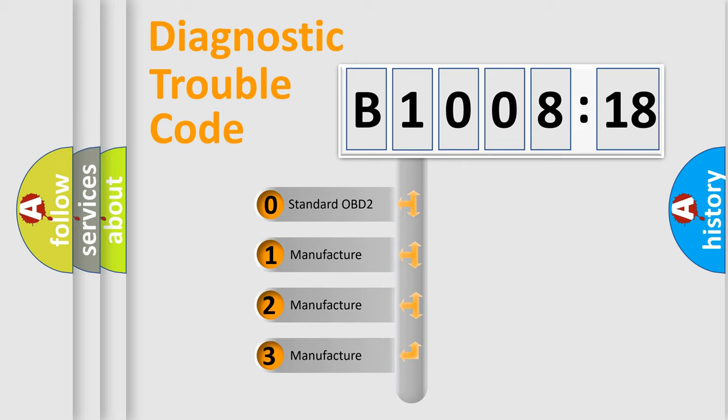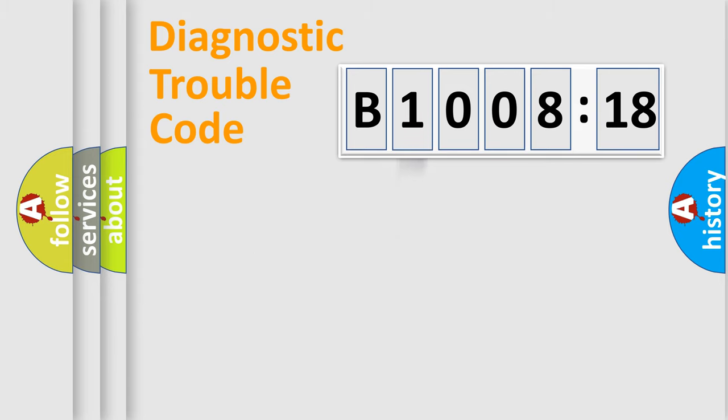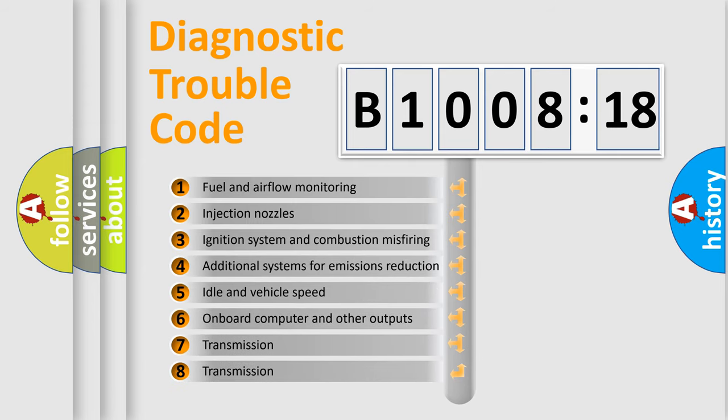If the second character is expressed as zero, it is a standardized error. In the case of numbers 1, 2, or 3, it is a more specific expression of the car-specific error.